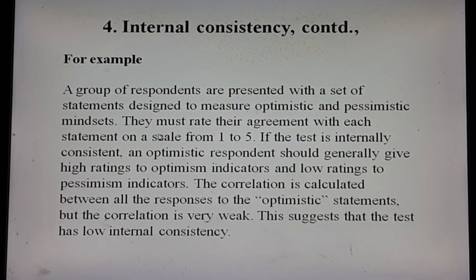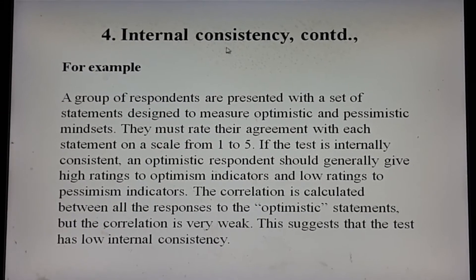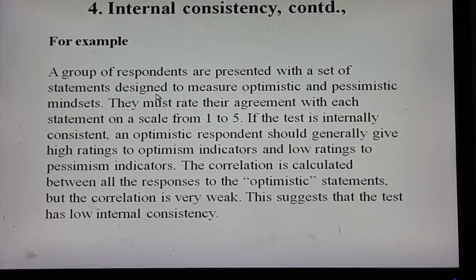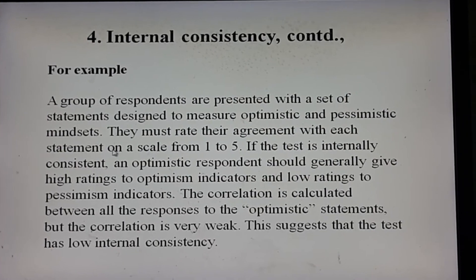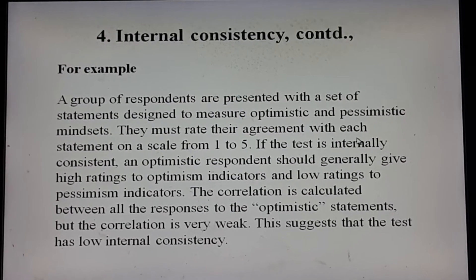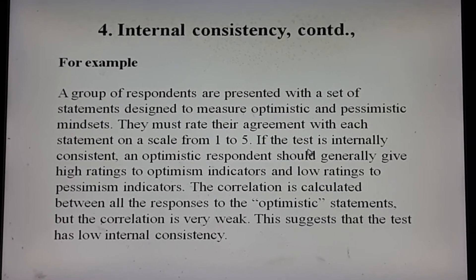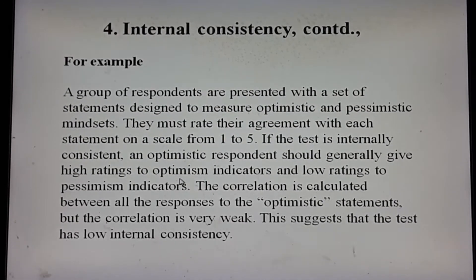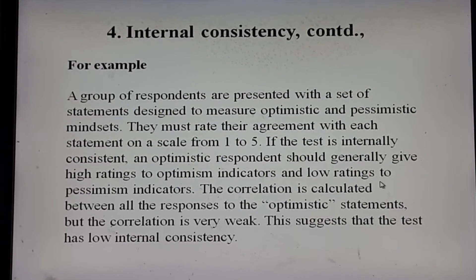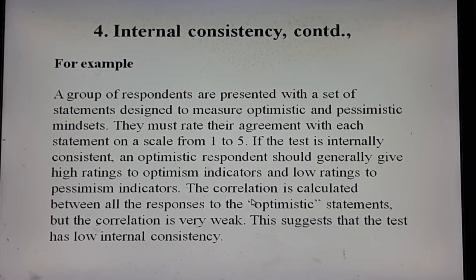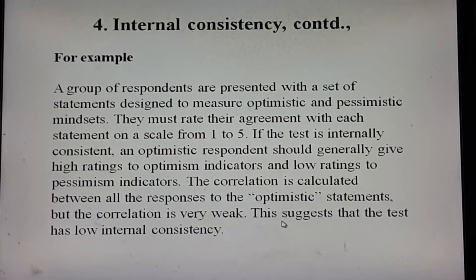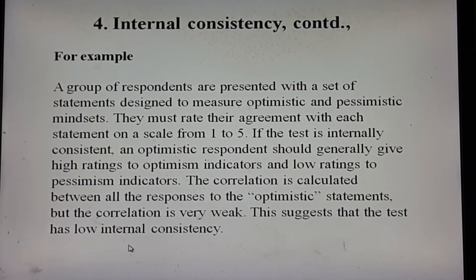Here is an example of internal consistency reliability. A group of respondents are presented with a set of statements designed to measure optimistic and pessimistic mindsets. They must rate their agreement with each statement on a scale from 1 to 5. If the test is internally consistent, optimistic respondents should generally give high ratings to optimism indicators and low ratings to pessimism indicators. However, the correlation calculated between all responses to the optimistic statements is very weak, suggesting that the test has low internal consistency.